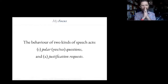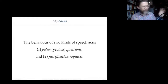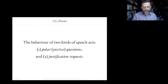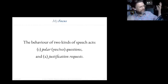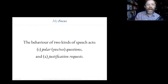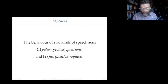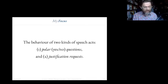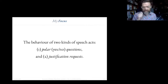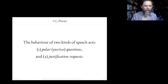What could be seen as a semantically anti-realist, representation-first analysis of our practices of assertion and denial, meant to justify the classical sequent calculus. I did that in 2005 and I'd like to revisit some of that partly because I've learned some things since then. My focus is going to be the behavior of two different kinds of speech acts: polar questions — which are just yes-no questions — and justification requests.